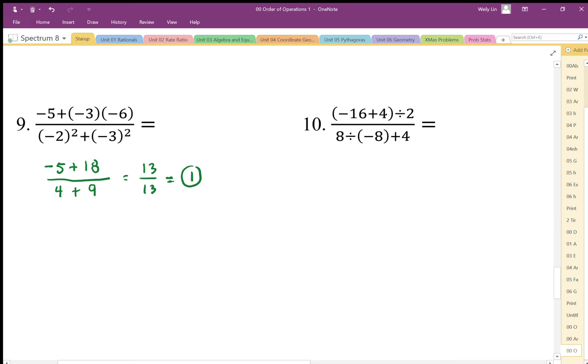Here again, what's implied is the numerator is done separately from the denominator, so I'm going to do the brackets first. Then I'm going to do a divide here. 8 divided by negative 8 is negative 1. I'll put it in brackets to keep it organized.